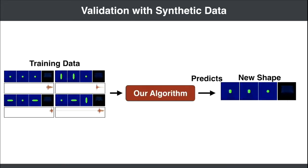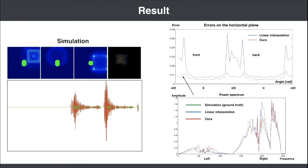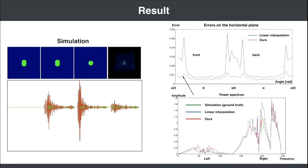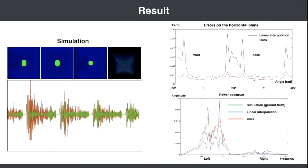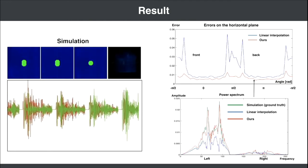We trained our algorithm using these synthetic data, and predicted new virtual HRTFs for a new shape obstacle. This is the result. With all directions, our algorithm had fewer errors than did linear interpolation, which means that our algorithm can generate appropriate HRTFs.